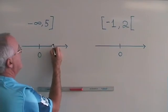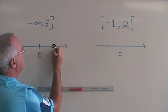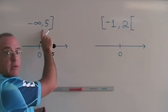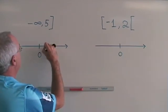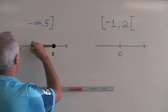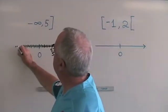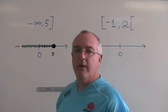The 5 is included, so I put a solid circle. And I am shading to the left towards negative infinity, so I shade towards the left. And I put a dot, dot, dot to show that it keeps going to negative infinity.